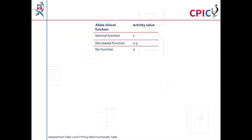There are over 70 defined CYP2C9 alleles, known as star alleles. Star alleles are characterised by their rate of function relative to the star 1 allele, which is designated as a normal function allele. As part of this guideline update, activity values were assigned to different CYP2C9 allele functions, as shown in the table at the top of the slide and available at the PharmGKB and CPIC websites.